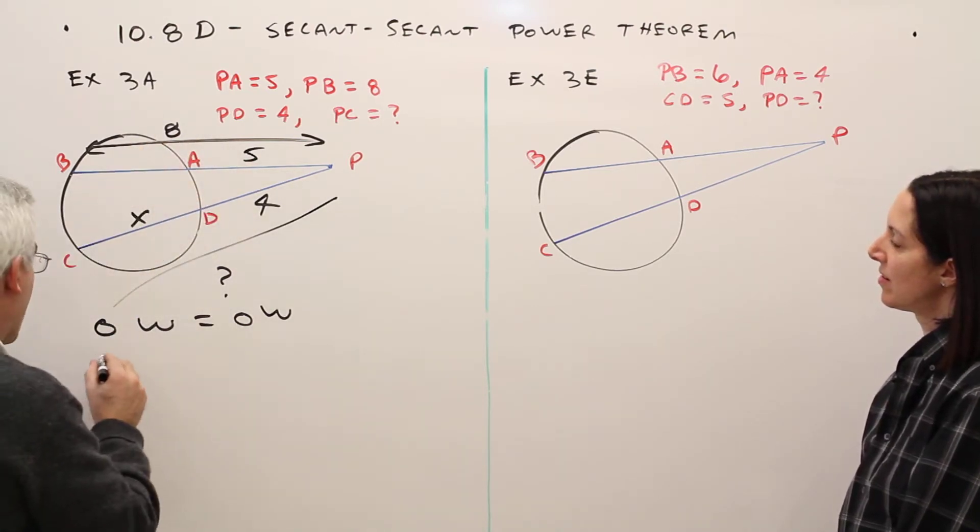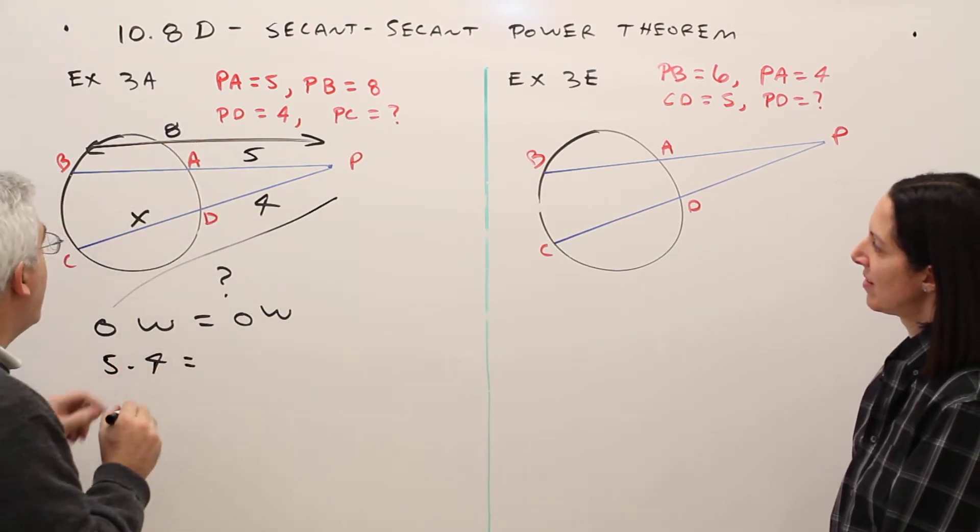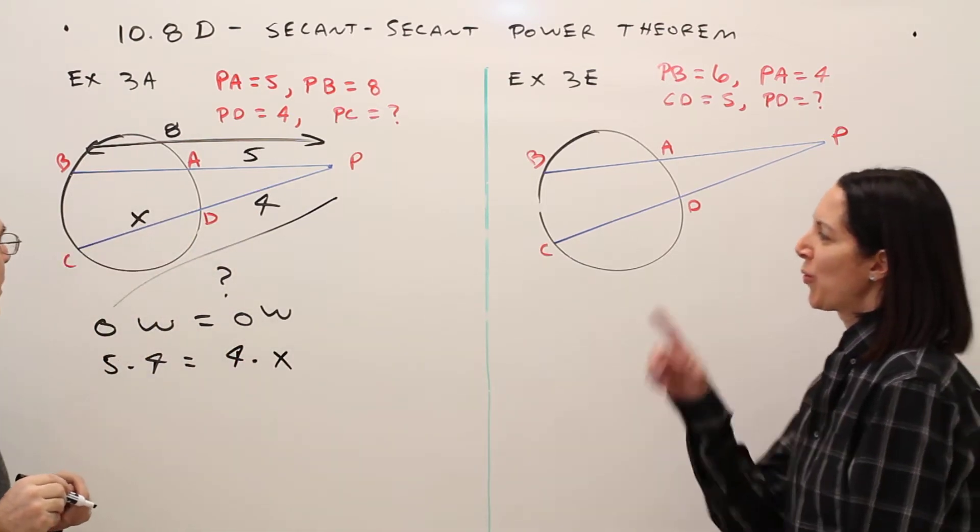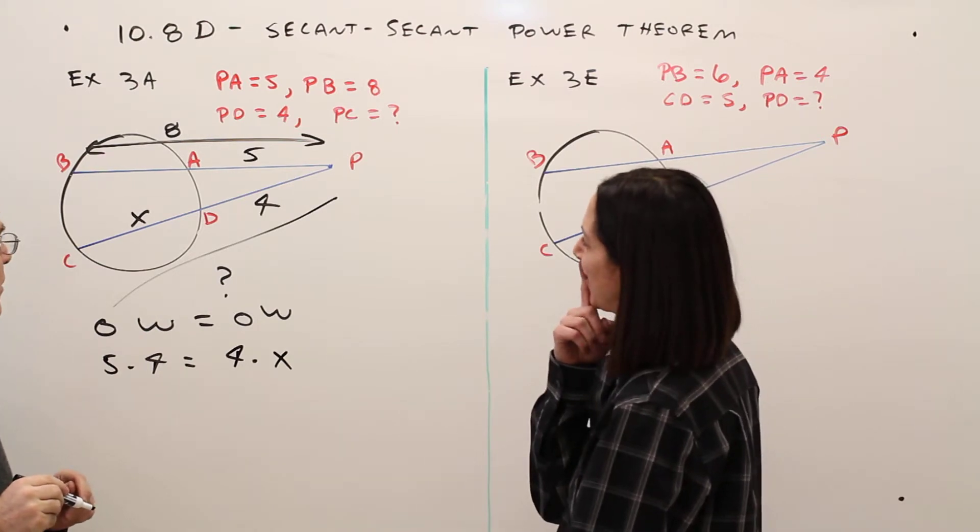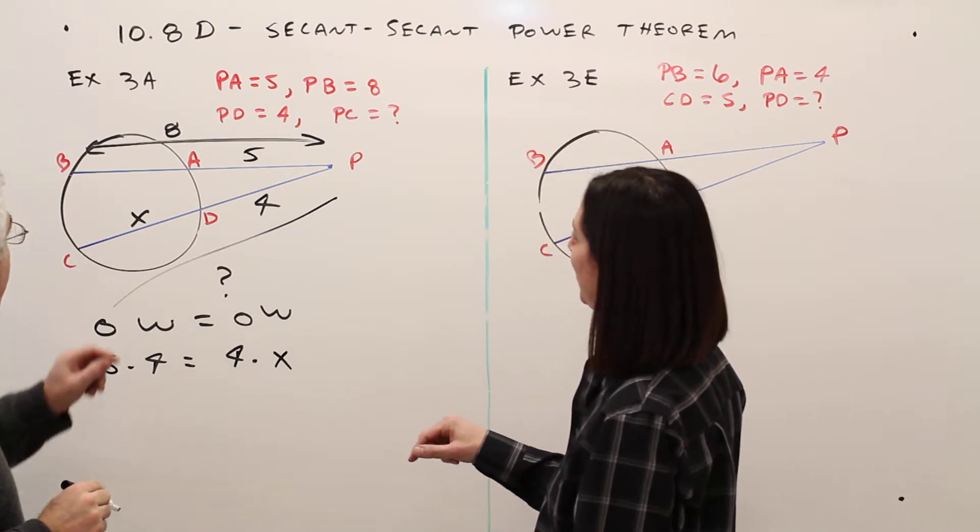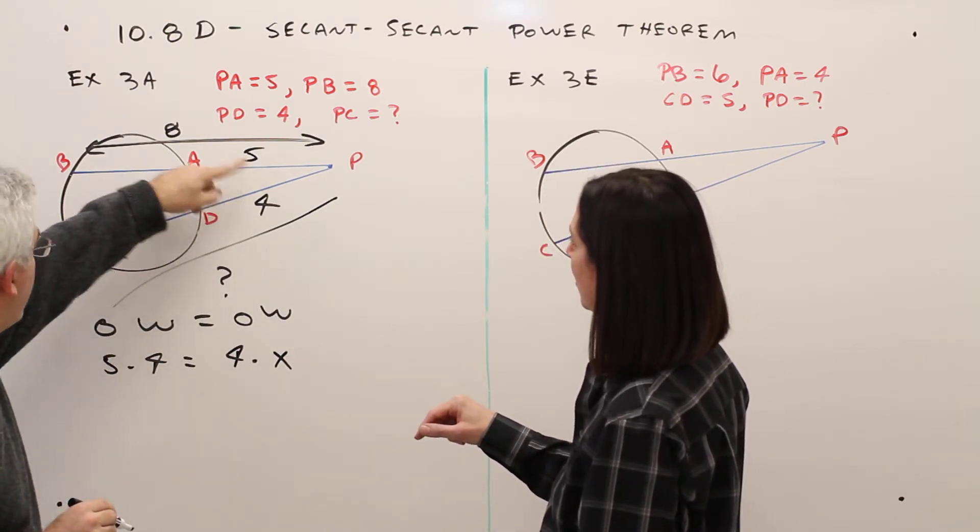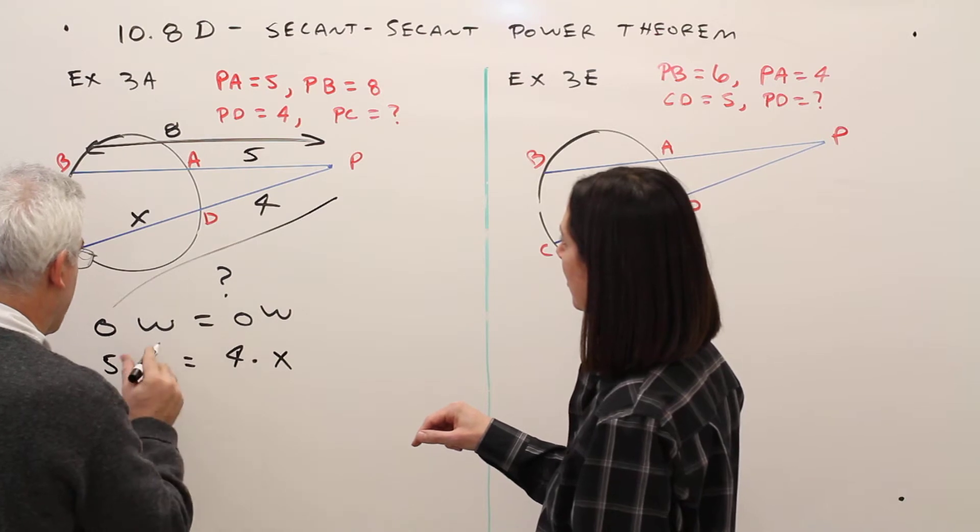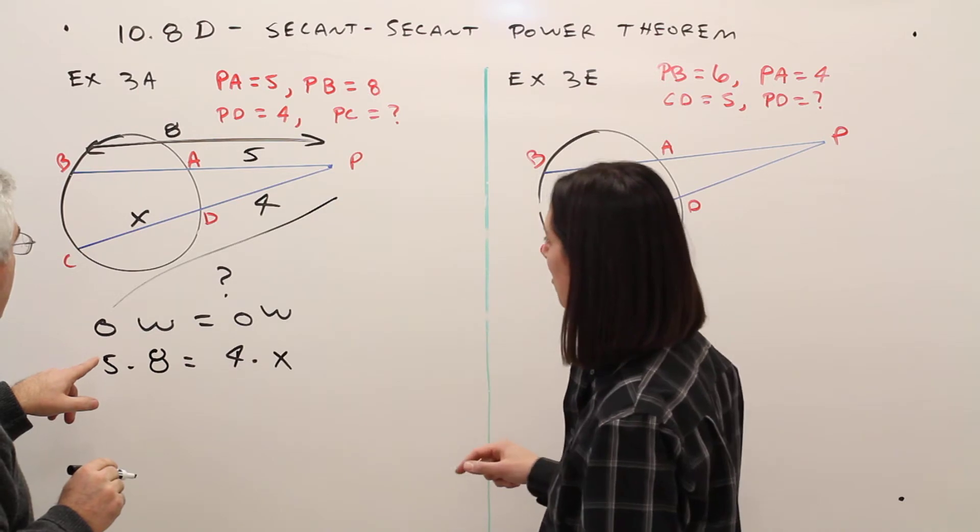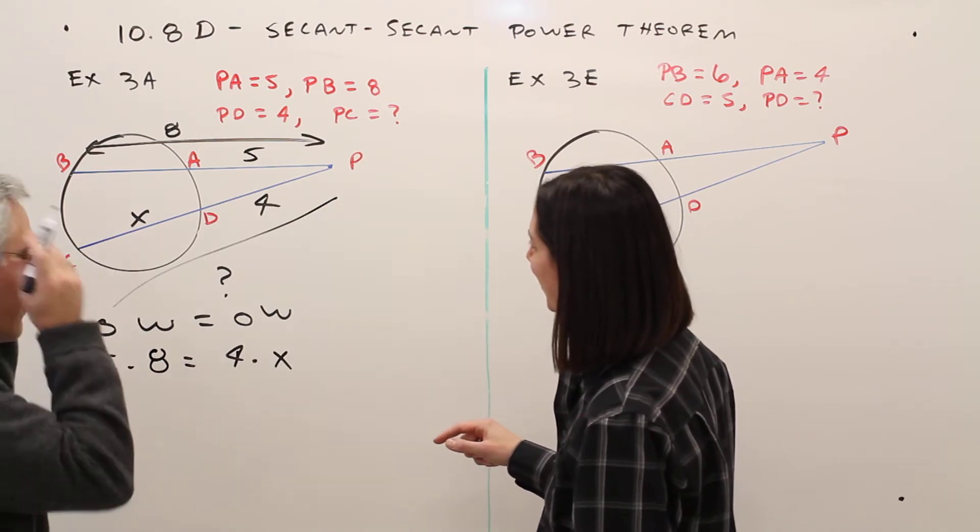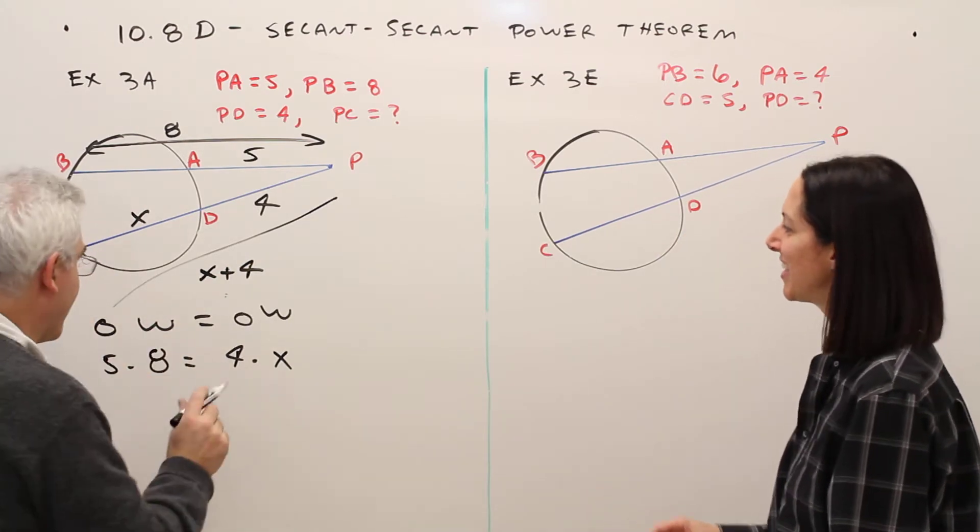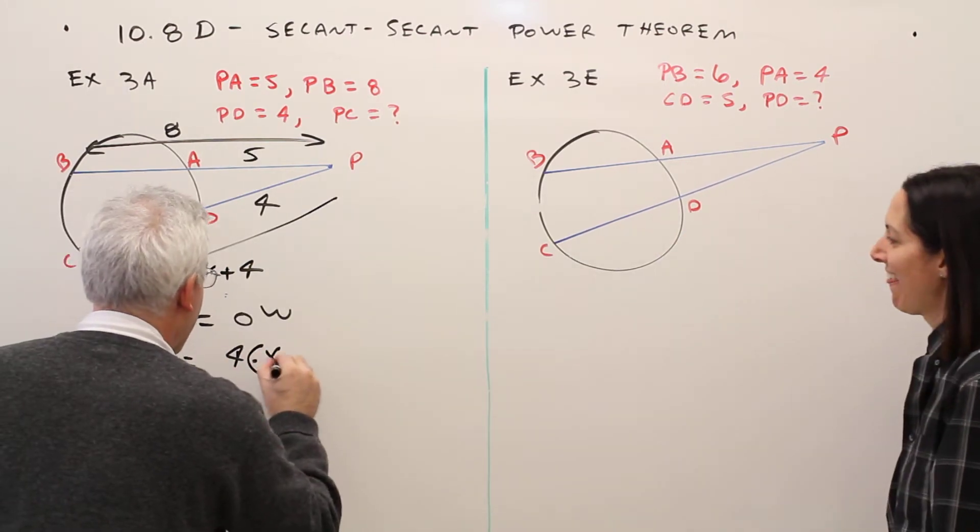5 times 8 equals 4 times... Wait, wait, wait. Mr. Olson, I'm not really... I'm a little unsure about the hole here. Oh, 5 times 8. And then what about this piece? I get that this is the outside, but what's the hole there? Oh, you're right. It's X plus 4. And I labeled that earlier. Thank you so much.